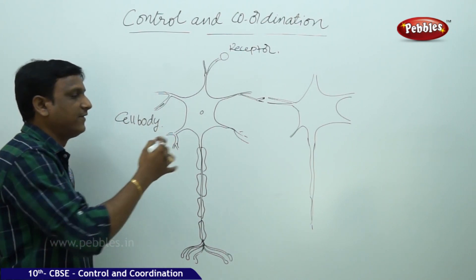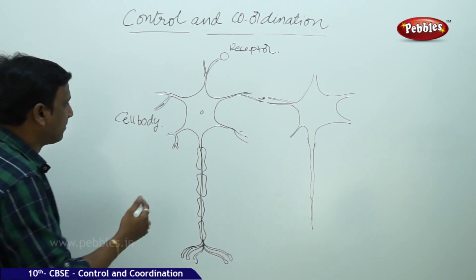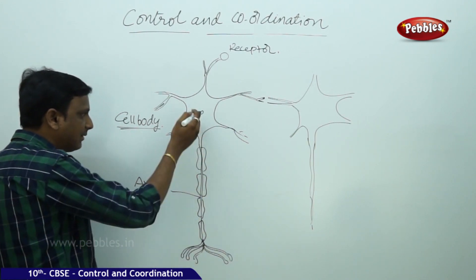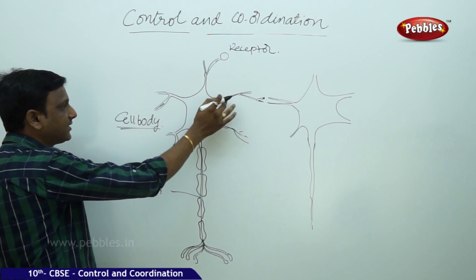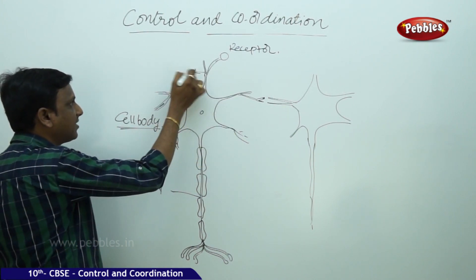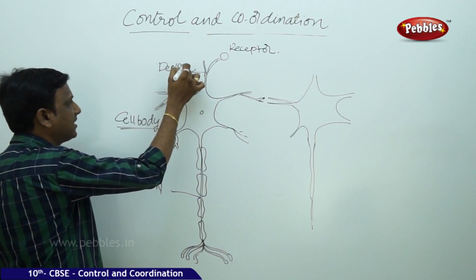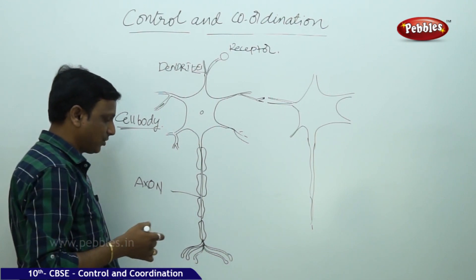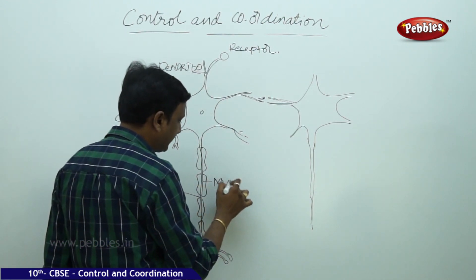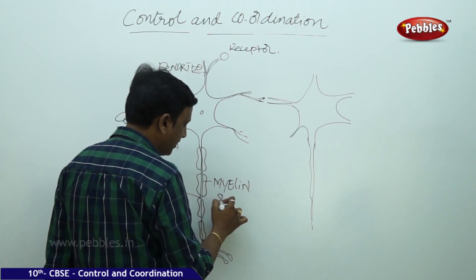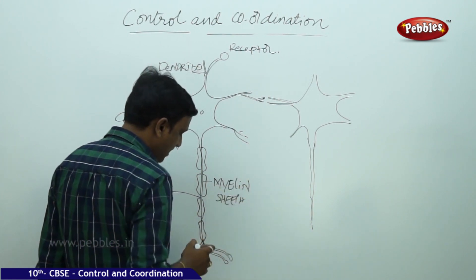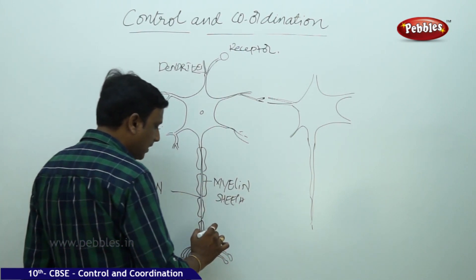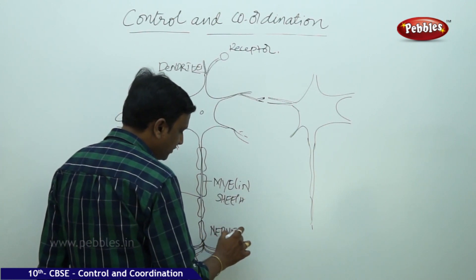Before we see how it functions, let us discuss the shape and different parts of this cell. This long extension is called the axon. The cell body also has many short extensions called dendrites. The axon is covered by a protective myelin sheath. The nerve cell ends at a point — these are called nerve terminals.